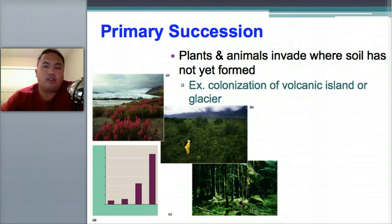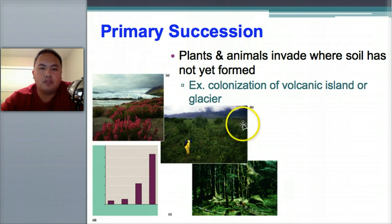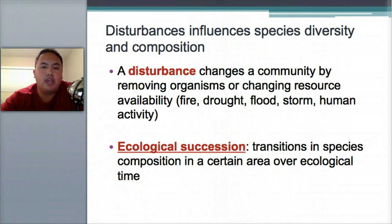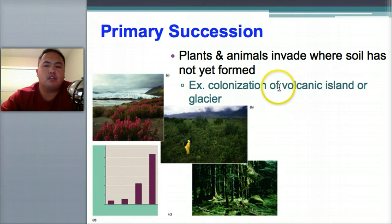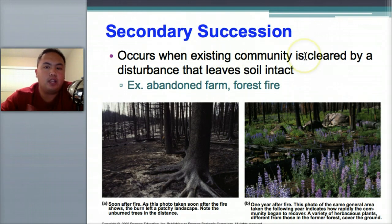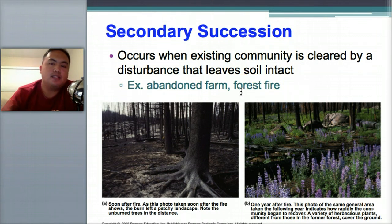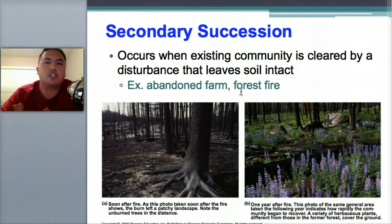Primary succession — primary means first — means plants and animals invade where soil has not yet formed. Think of colonization of a volcanic island like Hawaii or a glacier. That's primary succession. Secondary succession is when an existing community is cleared by a disturbance that leaves the soil intact — think of an abandoned farm or a forest fire where everything is cleared but the soil remains and we start over again.